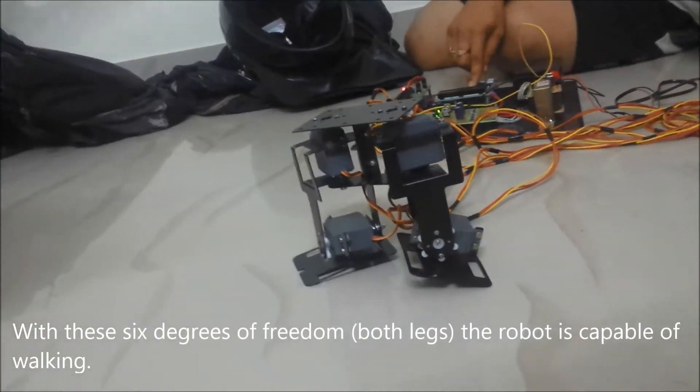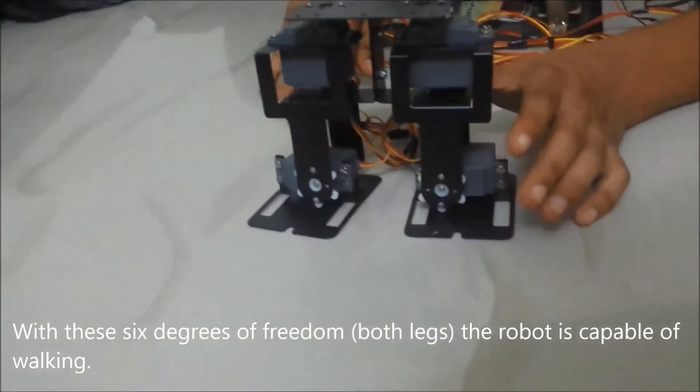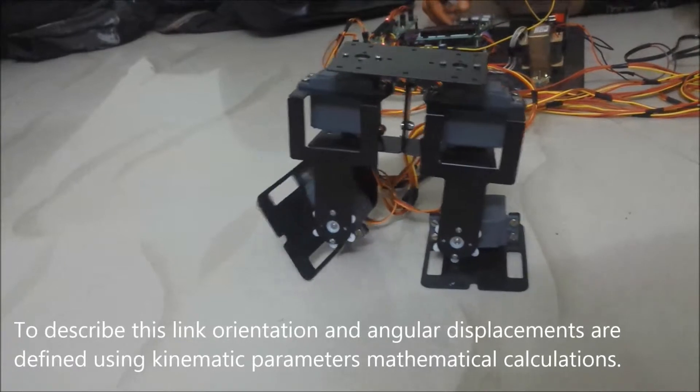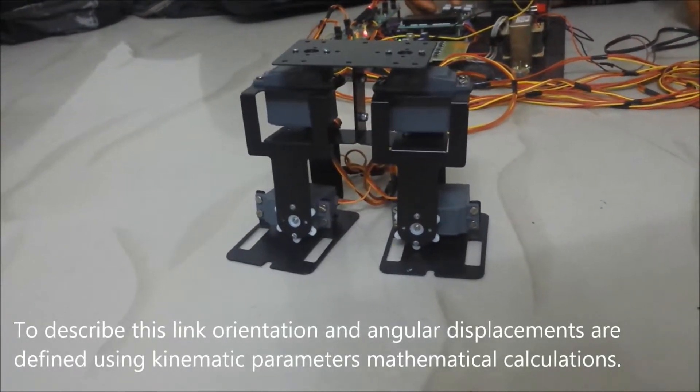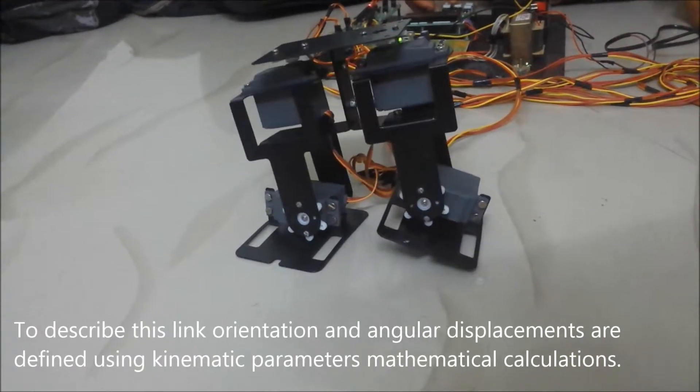With these six degrees of freedom in both legs, the robot is capable of walking. To describe this, link orientation and angular displacements are defined using kinematic parameters and mathematical calculations.